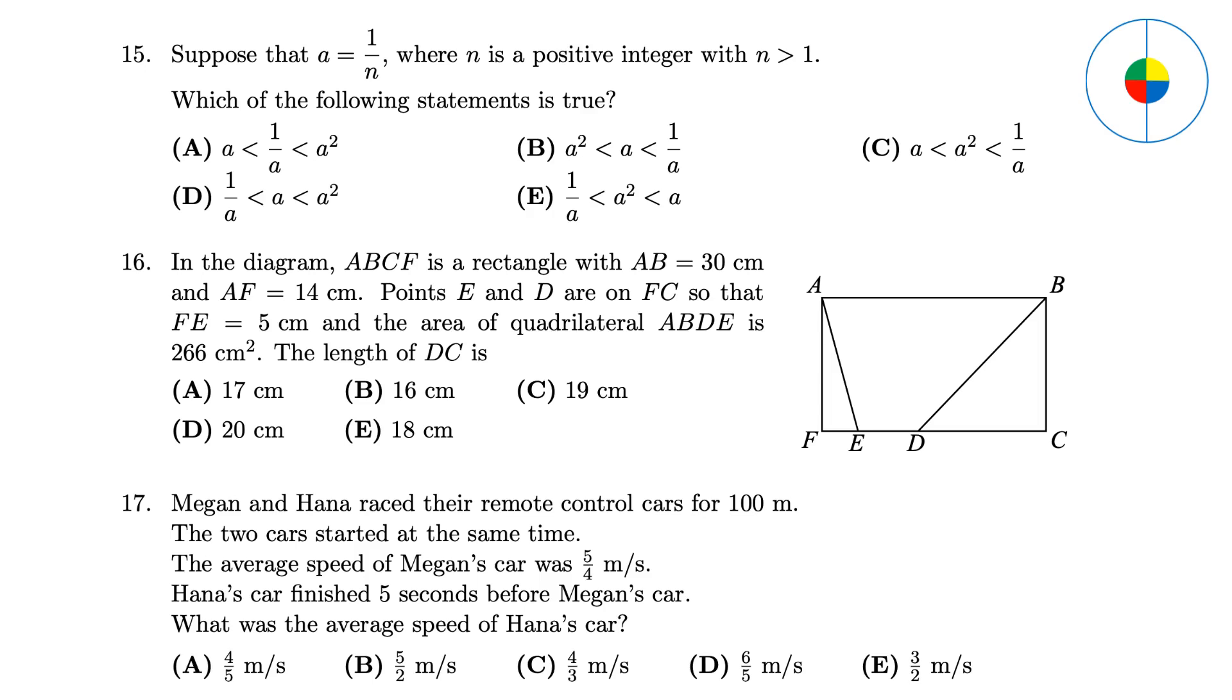Question 16: If you know the formula to calculate the area of a trapezoid, you know D is 8. So, DC is 30 minus 5, then minus 8. The answer is 17. Question 17: The total time used for Megan is 80 seconds. So, Hannah only uses 75 seconds. 100 divided by 75, the answer is C.